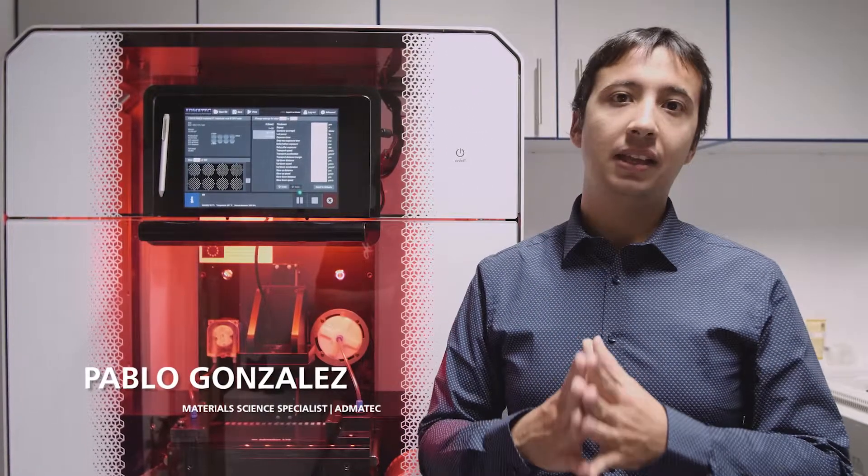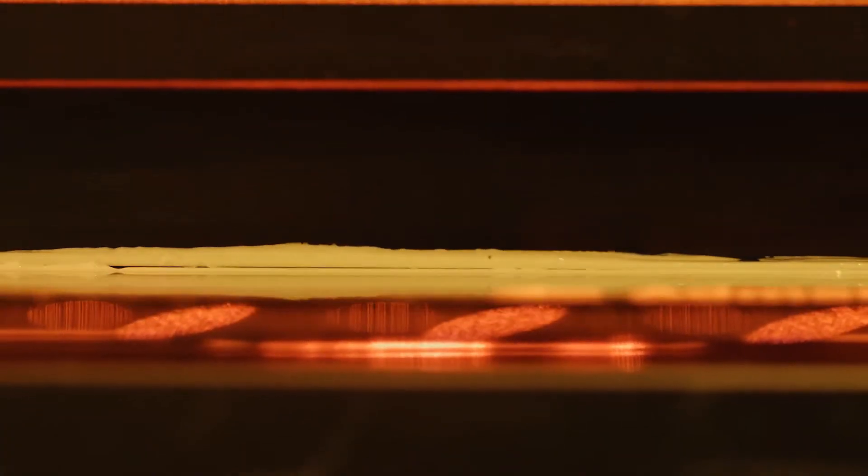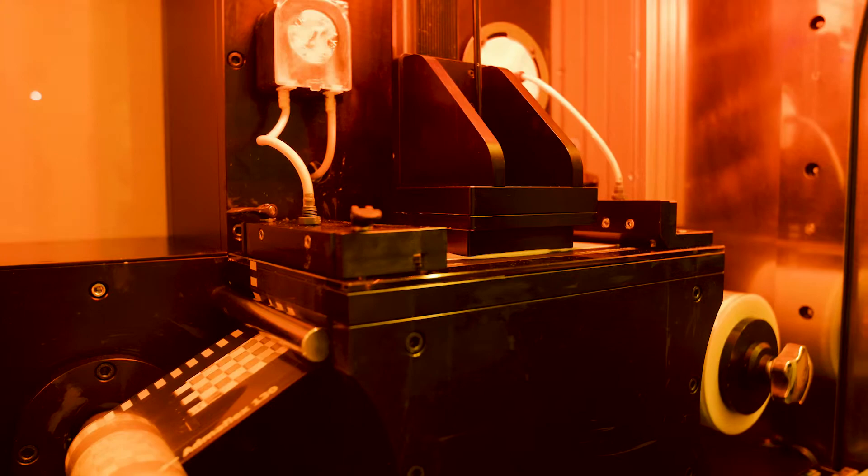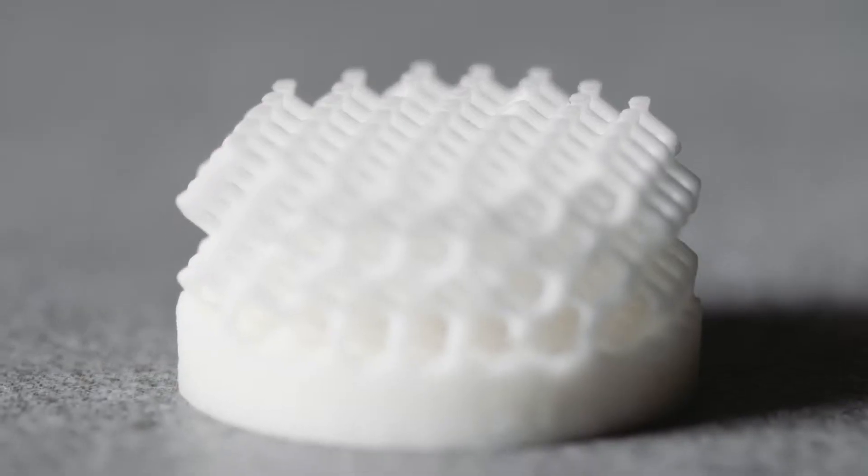DLP or Digital Light Processing is a technique that uses the power of light and photo curable resins in order to achieve 3D printed materials with very fine details.